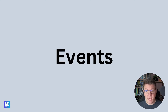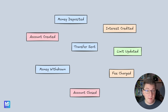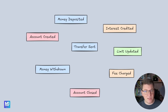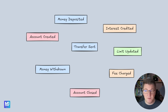At the core of event sourcing, we have events. Events are immutable facts that occur in our domain, and the critical distinction here is that events should carry business intent. Here are a few example events from the bank account domain: an account created event, money deposited, a transfer was sent, the account limit was updated, a fee was charged from your account. All of these are immutable facts of something happening to a bank account, and all of these events happen in some sort of sequence.